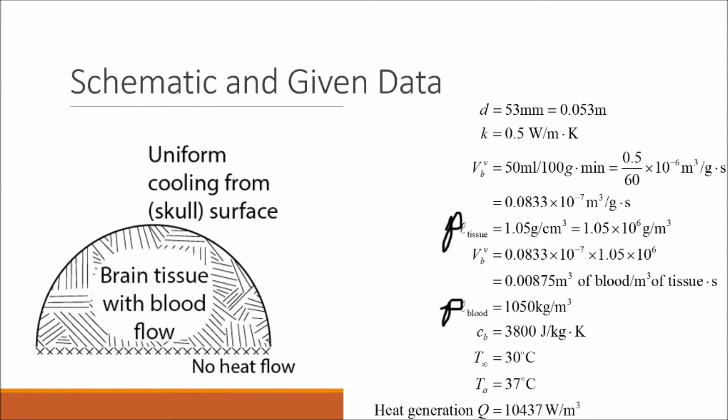First we begin by drawing a schematic and listing any known values. On the left is the schematic directly from the textbook and the brain here is depicted as some hemisphere with its outer surface held at a temperature of 30 degrees Celsius.